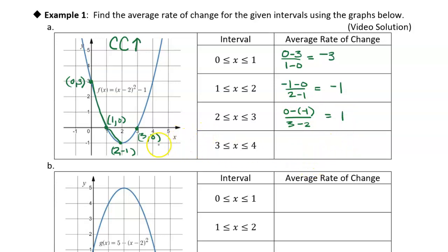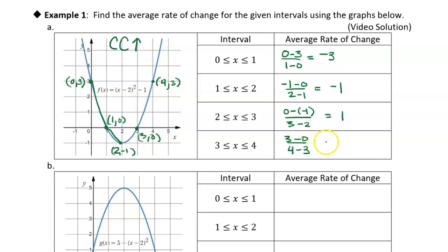For the last interval from 3 to 4, this looks like the point (4, 3). The average rate of change is (3 − 0) / (4 − 3) — that's delta y over delta x — which gives us positive 3.